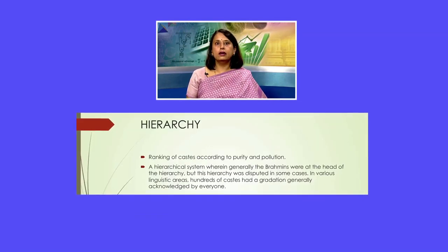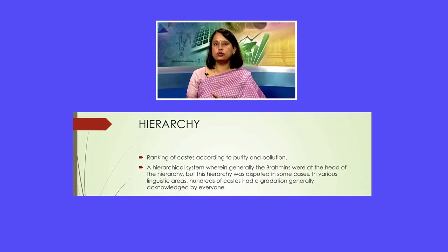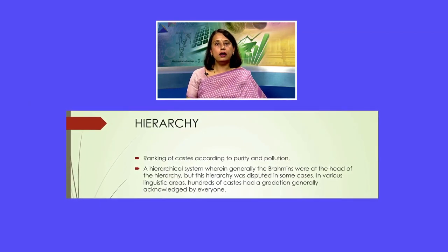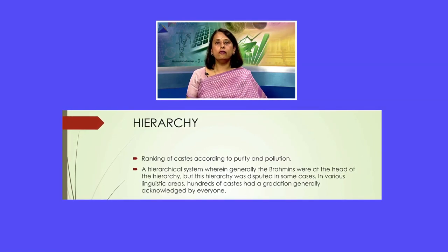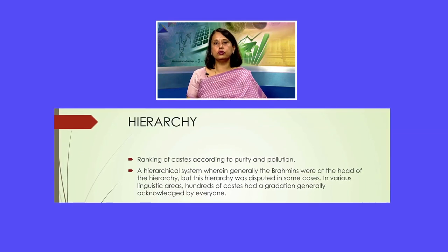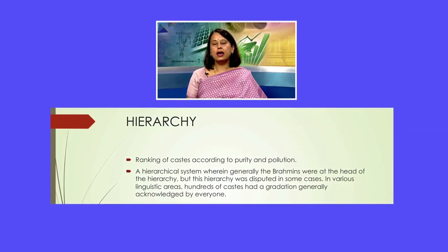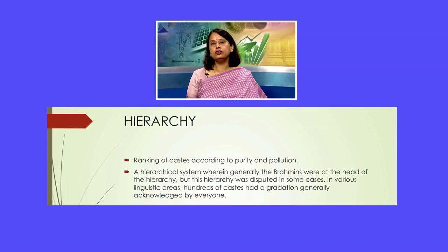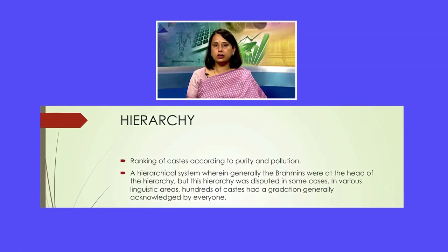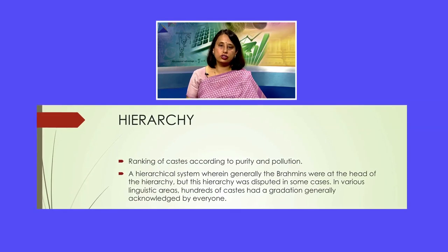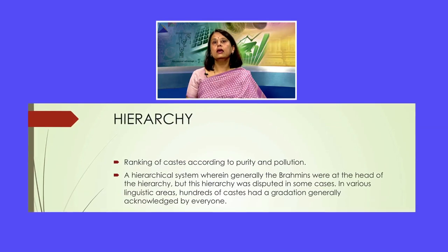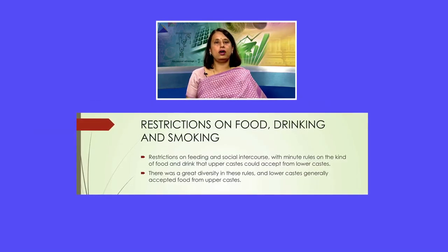Hierarchy refers to the ranking of castes according to the concept of purity and pollution. In a hierarchical system, Brahmans occupy the highest position, though this was disputed in some cases. Below the Brahmans were the Kshatriyas, then the Vaishyas, and finally the Shudras, with hundreds of castes having gradations generally acknowledged across various linguistic areas.